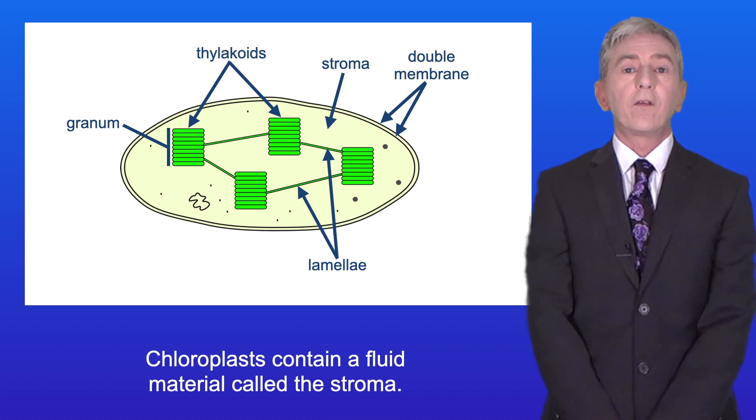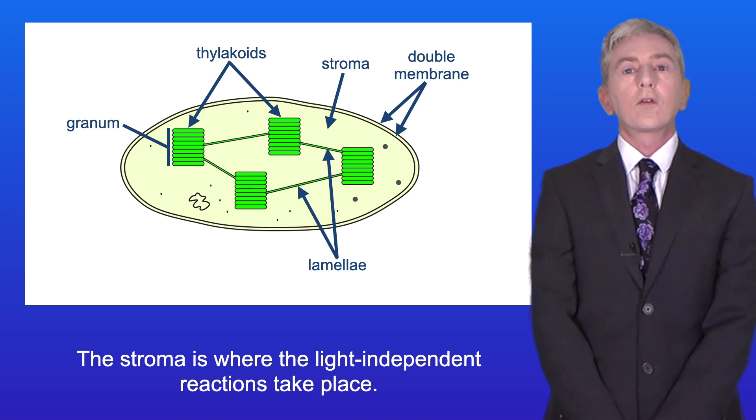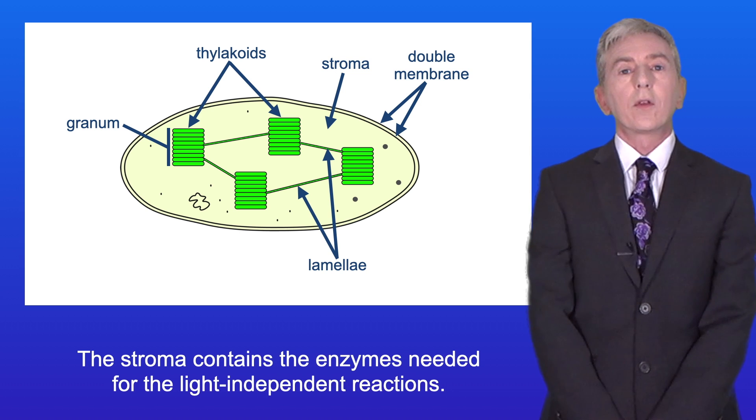Chloroplasts contain a fluid material called the stroma. The stroma is where the light independent reactions take place. So the stroma contains the enzymes needed for the light independent reactions.